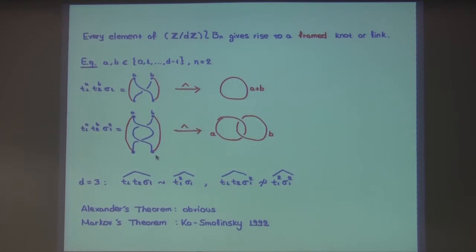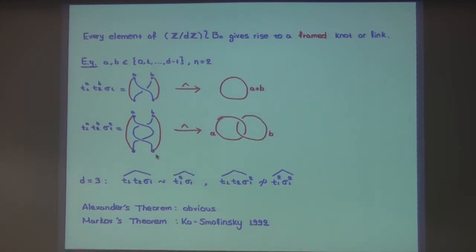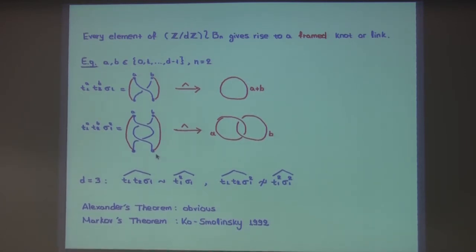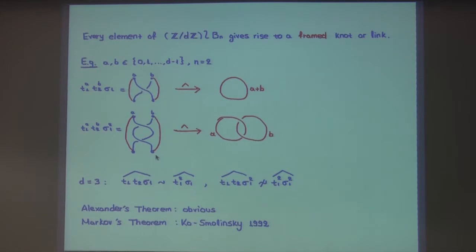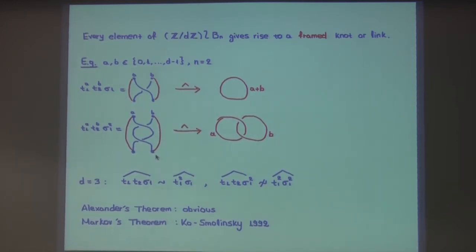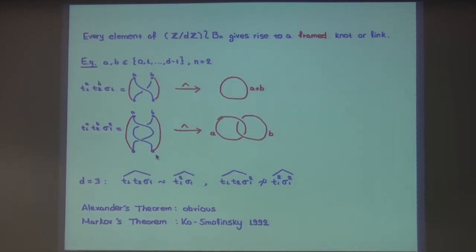Alexander's theorem — that every framed knot or link arises from a framed braid — is obvious: you find the corresponding braid and attach weights so things match up. Markov's theorem for framed braids says equivalence of framed braids means equivalence of framed knots: framed braids are equivalent through conjugation and Markov moves. The only difference now is that in conjugation, you can conjugate with T_i's, which you didn't have before.